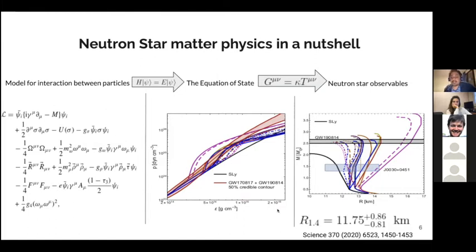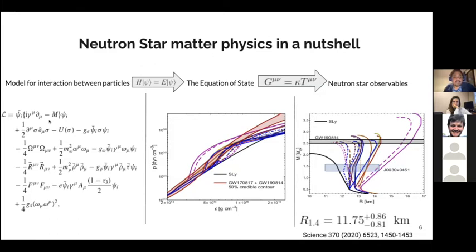Thanks to new observations, we now believe we know the radius of a 1.4 solar mass neutron star to be around 12 kilometers, plus or minus about a kilometer. Given that even the closest neutron stars are hundreds of light years away, measuring the radius to kilometer precision is really astonishing. This allows us to go back through the loop and start asking questions about how particles inside neutron stars interact.